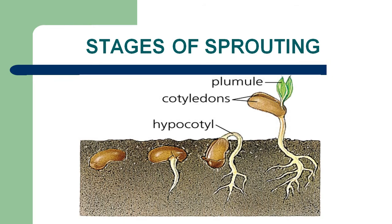Stages of sprouting: initially the seed is buried deep in the soil, as shown in the picture. After getting a proper environment it starts growing. The hair-like structure is called the hypocotyl. The bean-shaped structure is the cotyledons, and the green leaf-like structure is the plumule.